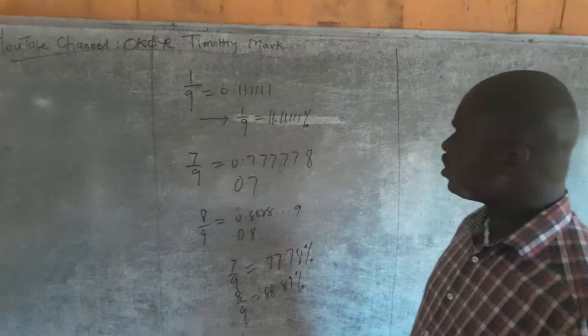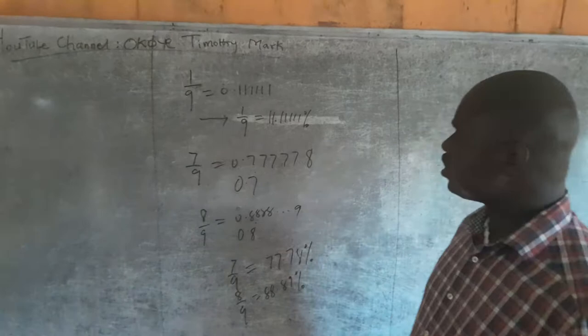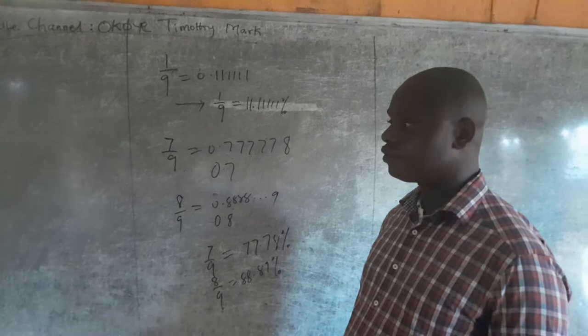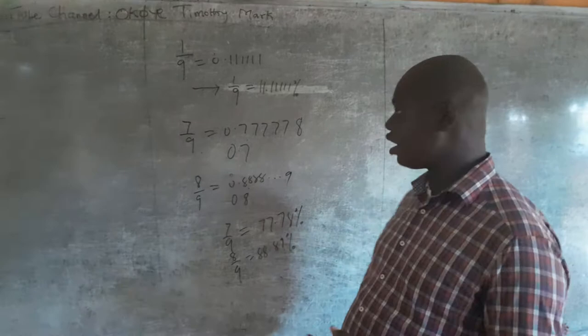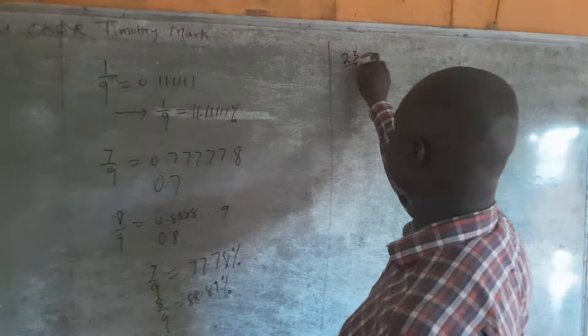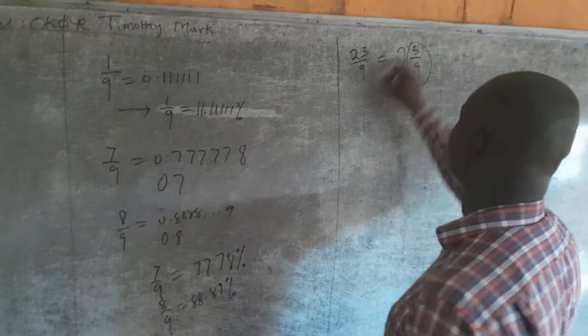Hence, if I have any whole number I want to divide by 9, I should just be careful to get the multiples of 9 inside the number, then the remainder goes with this. For instance, 23/9 is 2 whole number 5/9, which gives you 2.555 or 2.5 with a dot.